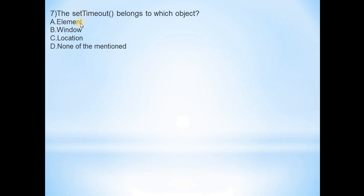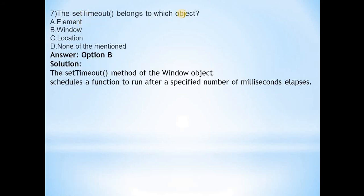The seventh question is: the setTimeout function belongs to which object? The answer is B, that is the window object. The window object schedules a function to run after a specified number of milliseconds elapses.